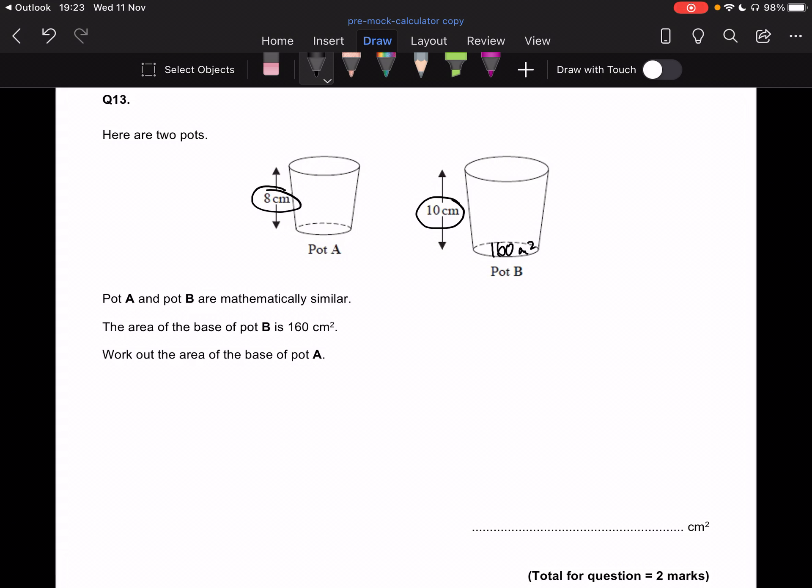So first step we have to do is work out what's the linear scale factor. So the linear scale factor we work out by doing what's one linear side. So I have to make sure that this is a height, right? So it's linear. It doesn't have two or three dimensions. It's not an area and it's not a volume, so it's a linear unit.